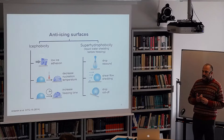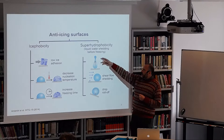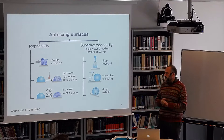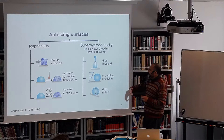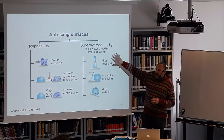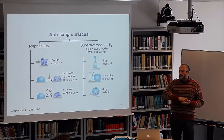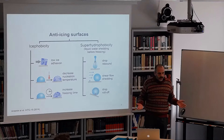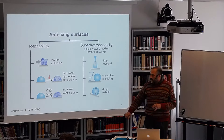Another approach is linked to super-hydrophobicity. In this case, we want the liquid water to move on the surface, preventing ice formation. The liquid water goes away because of droplets rolling off, shear flow shedding droplets, or droplet roll-off. This is a very dynamic condition — the drop impacts, and because of the boundary layer, vibration, and impact velocity, the liquid goes away and there is no ice formation.